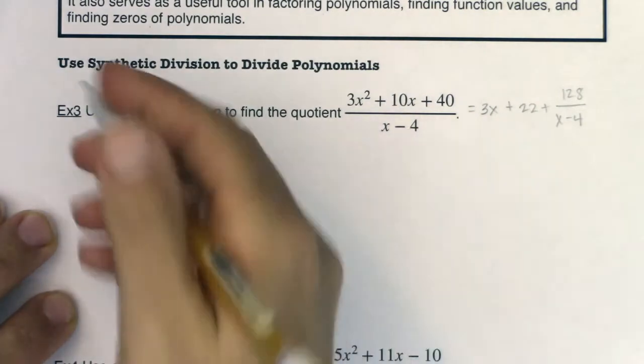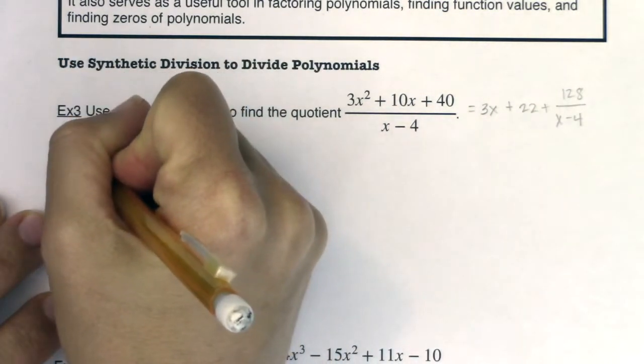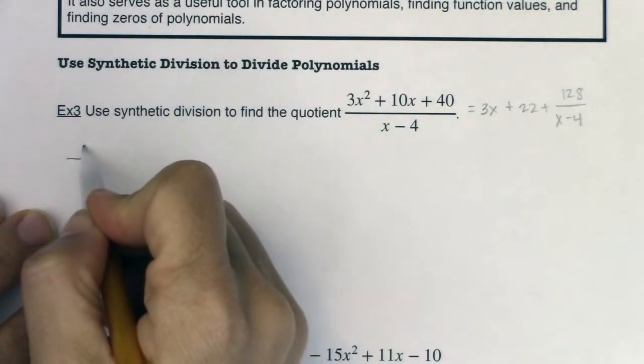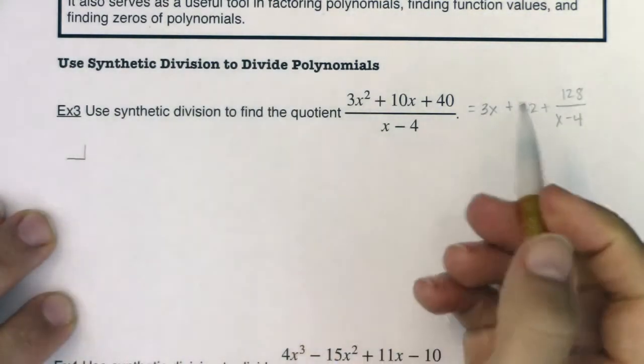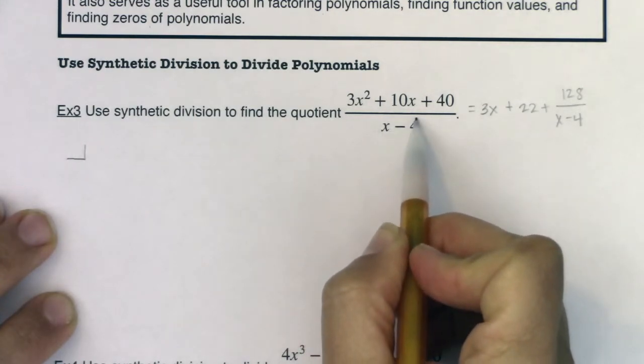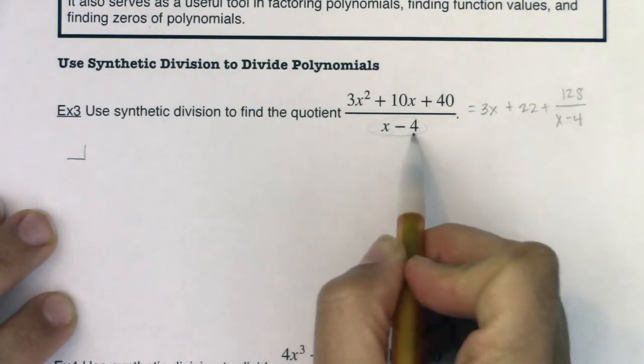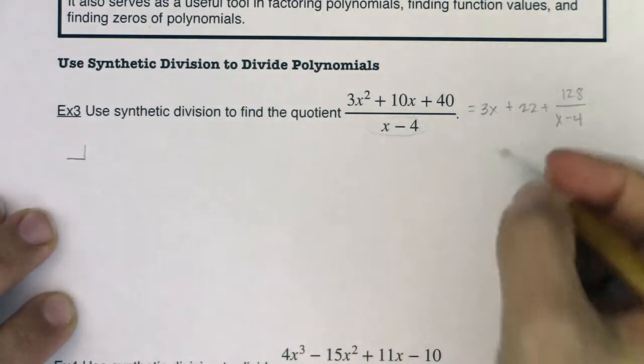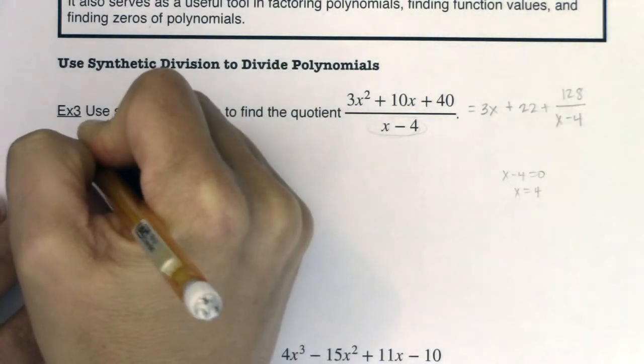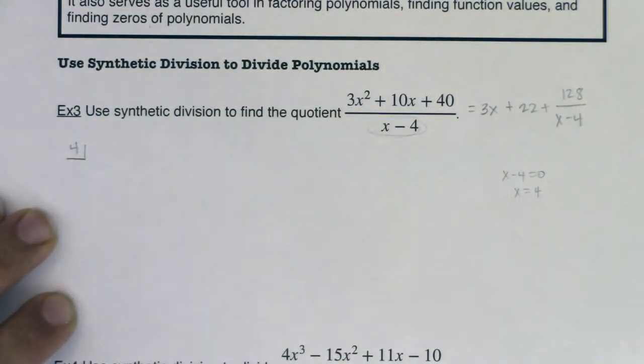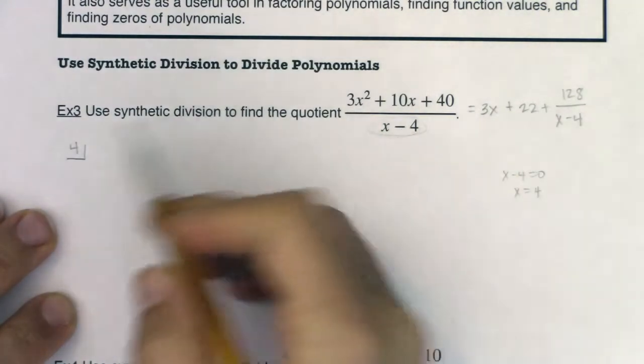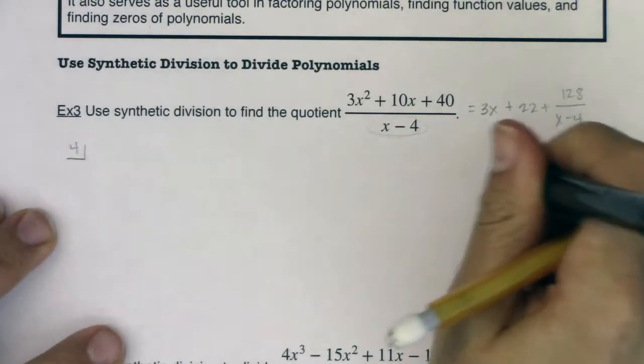Okay, so how synthetic division works is you usually put the zero of your divisor in this little, I put it in this, I call it a house. I don't think anyone else calls it a house, but I do. And how you determine what number to put in there is you look at your divisor and what would zero out this factor. And if x minus 4 were to be equal to zero, you get x equaling 4. So that is the number that you put in there. And it might just be easier to remember it's the opposite of whatever number you see here. So if you see a negative 4, put a positive 4 in there.